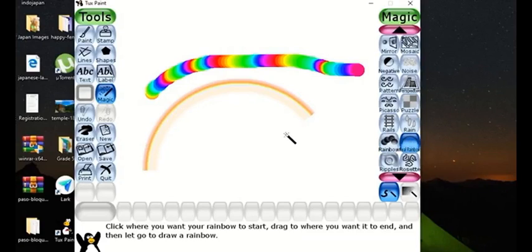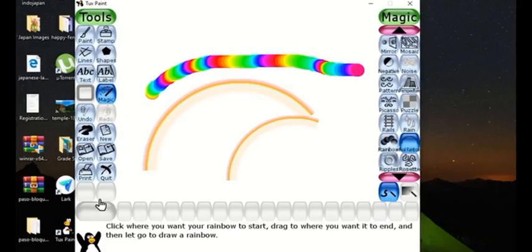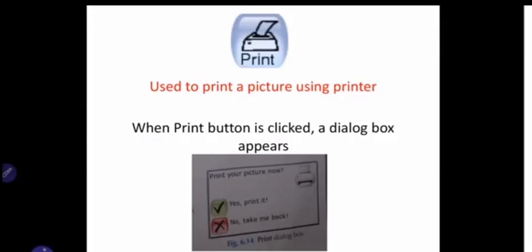Drag the wand in an arc shape and you can see it allows you to draw a rainbow just like the one you see in the sky after rainfall. The rainbow effect draws a trail of rainbow colors. Now let's see how to print.